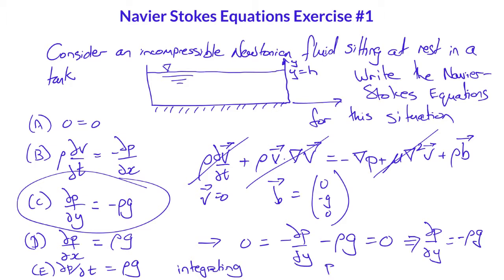Now integrating this result between zero and h with respect to y, we get minus rho g h.